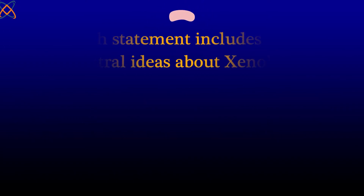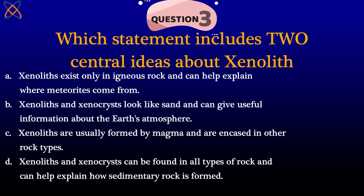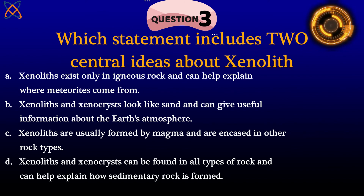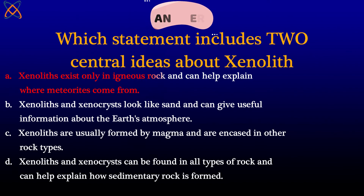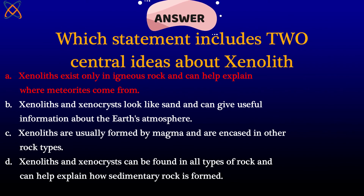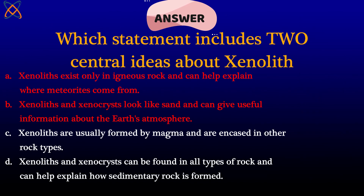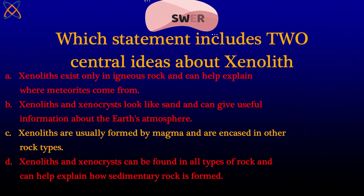Here is a thought question from the internet: which statement includes two central ideas about xenoliths? Option A says xenoliths exist only in igneous rock — but they can exist in metamorphic rock too, so that's wrong. Option B says xenoliths and xenocrysts look like sand — no. Option C says xenoliths are usually formed by magma and are encased in older rocks — that's the best answer. Option D says xenoliths and xenocrysts can be found in all types of rock and explain how sedimentary rocks are formed — that last part is incorrect. The answer is C.